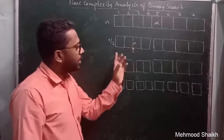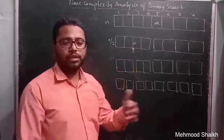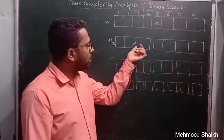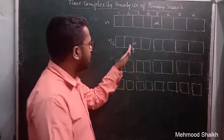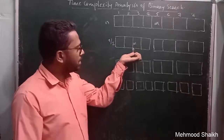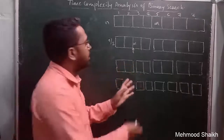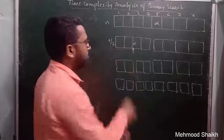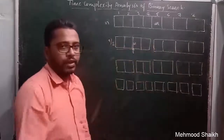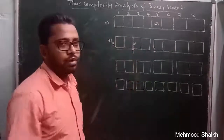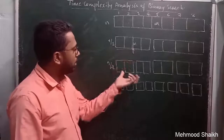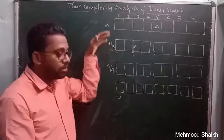If the key element equals the middle element, we return its position. Otherwise, if the element is less than the middle element, we ignore the right sub-problem and focus only on the left sub-problem, further dividing the problem size from n/2 to n/4.